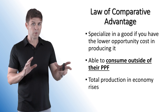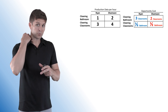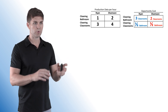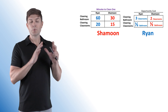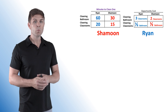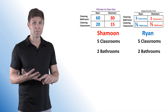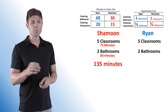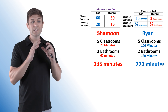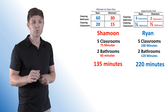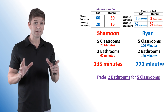Let's show exactly how this benefits Ryan and Shamoon and allows them to consume beyond the production possibility frontier. We'll convert the data from output to input — minutes to clean one bathroom and minutes to clean one classroom. Both are tasked with cleaning five classrooms and two bathrooms. Without trade, it takes Shamoon 75 minutes for five classrooms and 60 minutes for two bathrooms — 135 minutes total. Ryan needs 100 minutes for five classrooms and 120 minutes for two bathrooms — 220 minutes total. Now let's try trading on terms of two bathrooms for five classrooms.